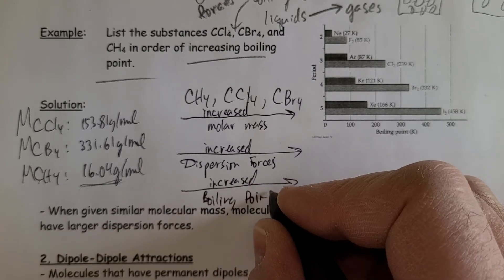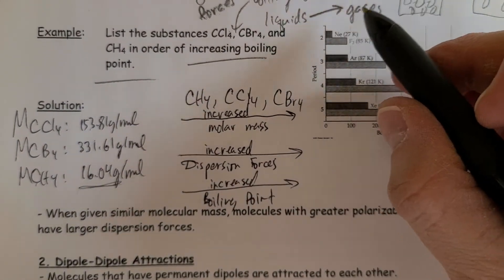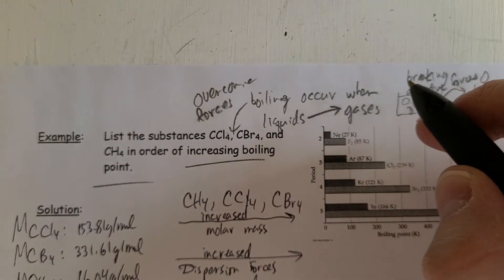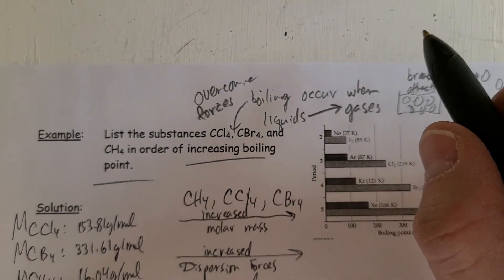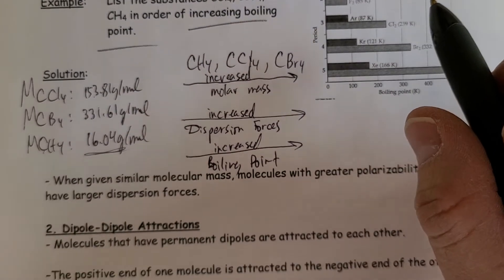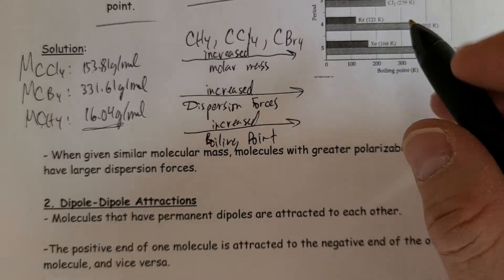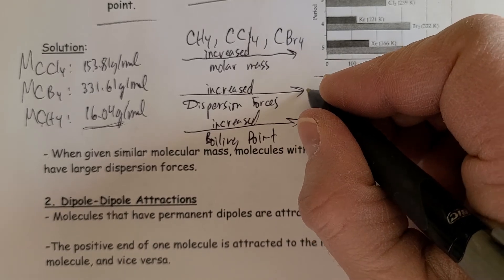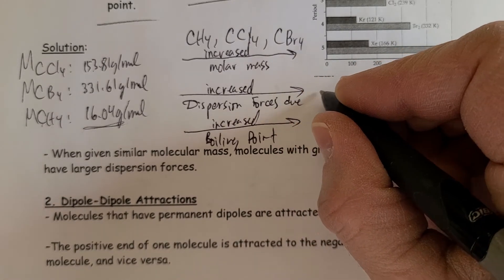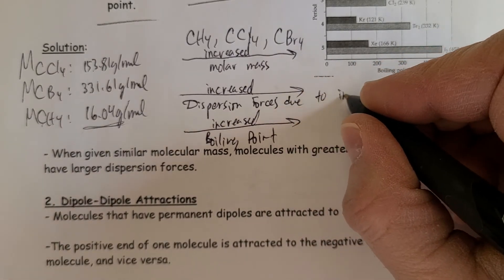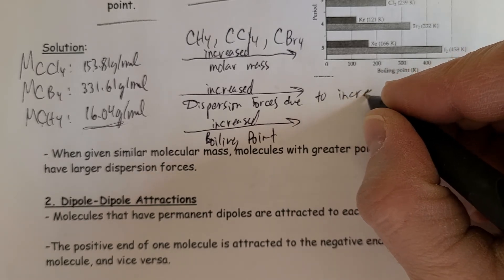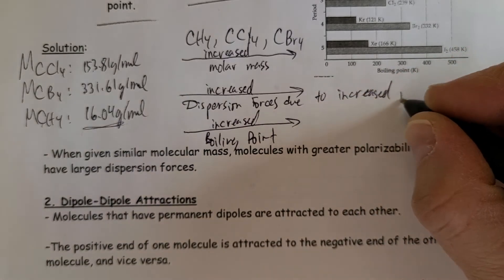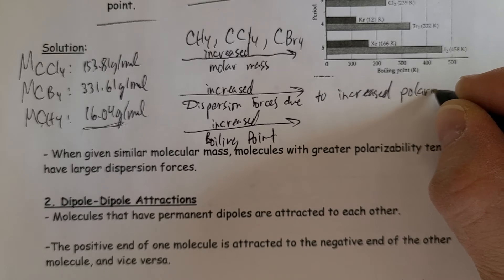Because again, boiling point, melting point, you're trying to overcome these forces of attraction. And if we have dispersion forces here, we need to overcome those forces. I can also say here, increased dispersion forces due to increased polarizability.